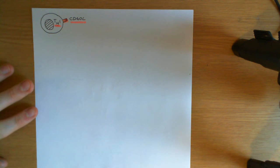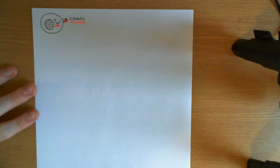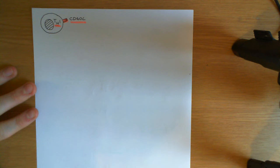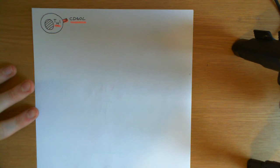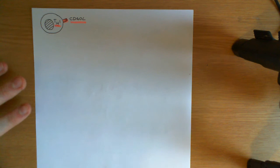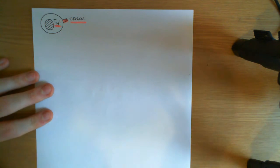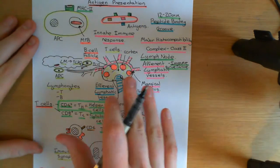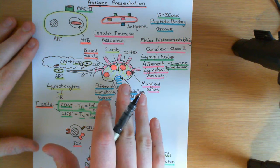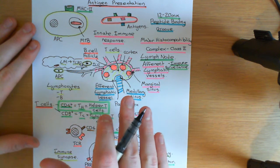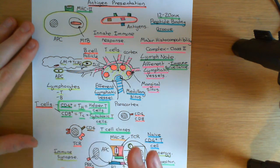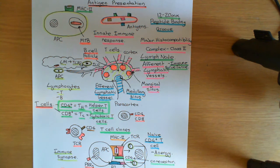We've got loads of these T-helper 1 cells being produced in our mediastinal lymph nodes. Now they need to go to the actual site where the mycobacterium tuberculosis cells are infecting and take action. The first thing is they need to go from the lymphatic system into the circulatory system, and then from the circulatory system they can get into the affected tissue. To understand how this works, you need to understand the way the lymphatic system works.